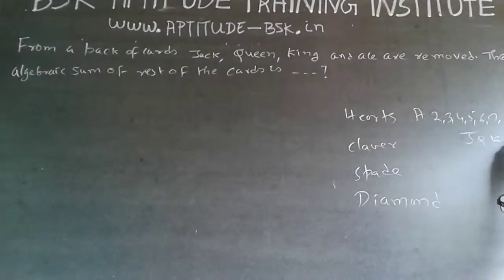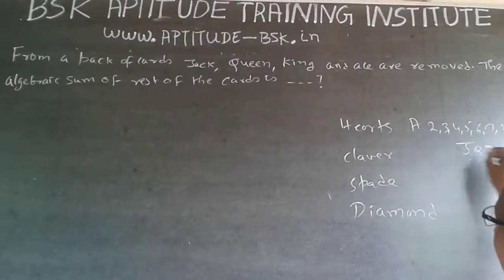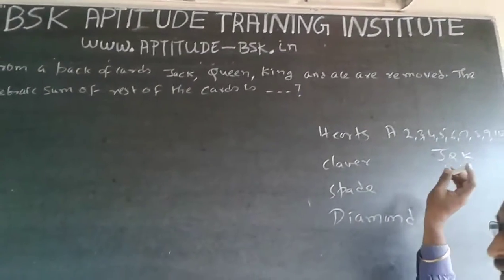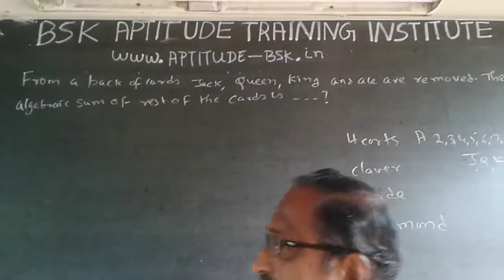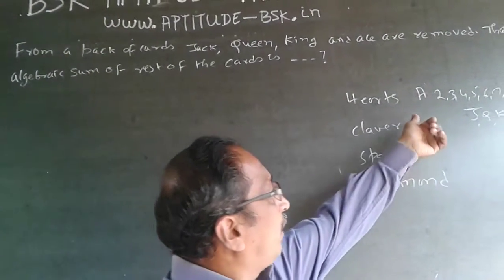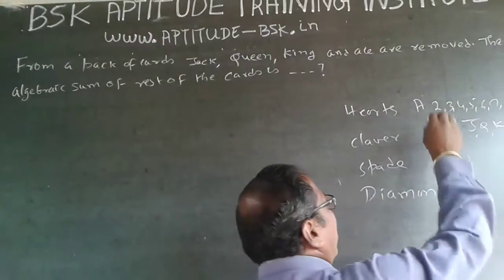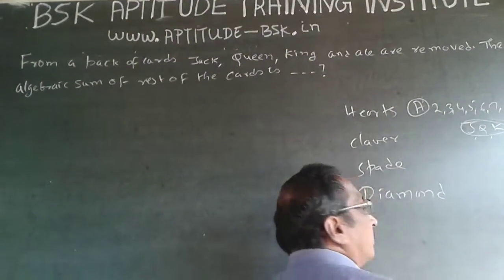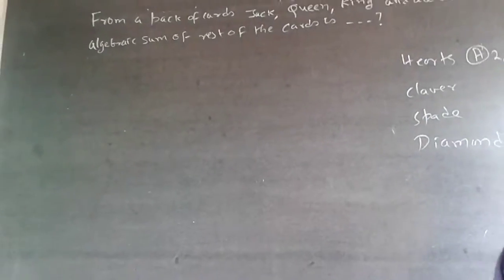So these are all known as picture cards. Jack, Queen, King - Ace was a picture card. Jack, Queen, King, Ace are all picture cards because the picture is there. Now what they are doing is Ace, Jack, Queen, King they are removing - Ace, Jack, Queen, King - and asking for the algebraic sum of cards.